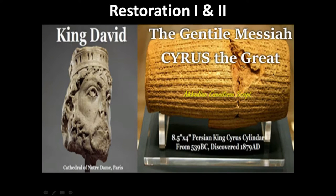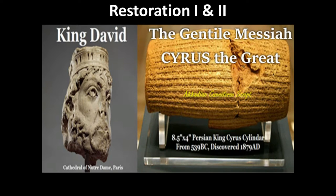Here you'll see in the Museum of Notre Dame in Paris a statue of King David made many centuries ago. And here to the right you'll see the Cyrus Cylinder, written in Akkadian cuneiform script, from 539 BC, recounting the victory of Cyrus over the Babylonians. Cyrus talks about the restoration of all religions, including the Jewish religion. It was the Persian king, Cyrus the Great, who began the initiative to restore people that had been forced into Babylon back to their original lands along with their religions.